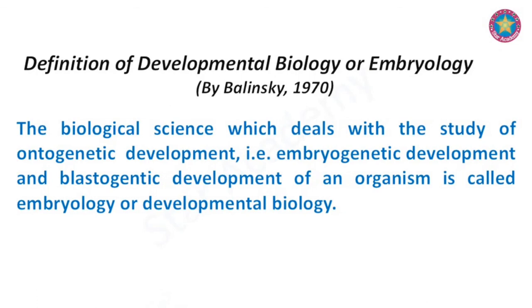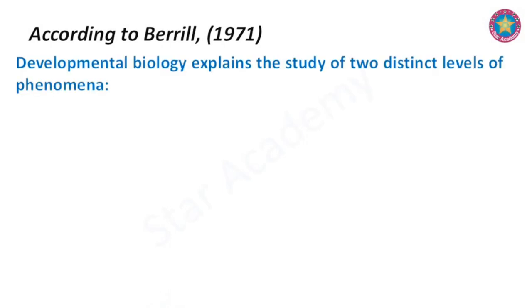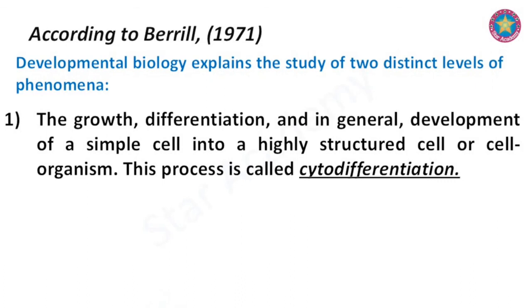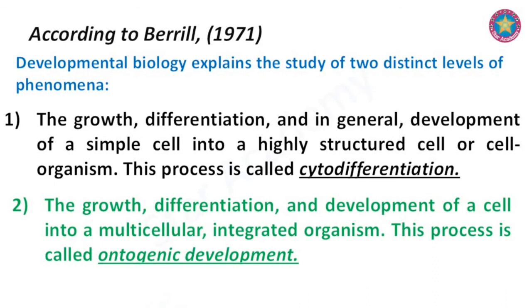According to Barrel, developmental biology explains the study of two distinct levels of phenomena: number one, the growth, differentiation, and general development of a simple cell into a highly structured cell or cell organism — a process called cytodifferentiation; and number two, the growth, differentiation, and development of a cell into a multicellular integrated organism — a process called ontogenetic development.